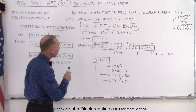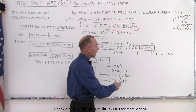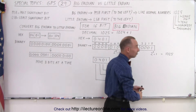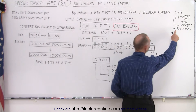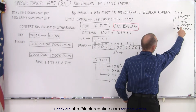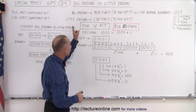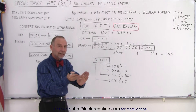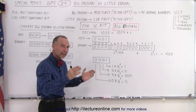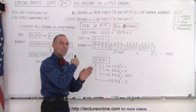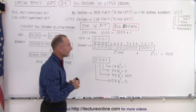Big Endian is MSB first, or to the left, like normal numbers. Here we have the decimal number 1025: the digit on the left is the biggest, representing thousands; the second represents hundreds; the third represents tens; and the fourth on the right represents single digits. So the most significant bit — that's what MSB means — is to the left, and that is what GPS uses. In all data formats, the bit furthest to the left is the most significant and represents the biggest value in that data stream.